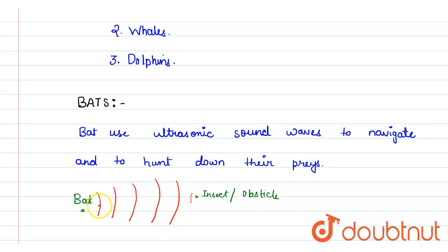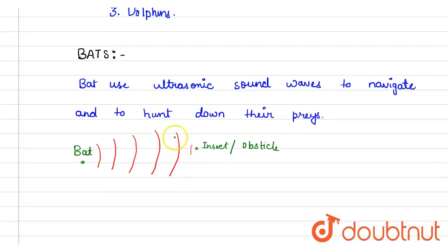And the reflected waveform is received by the ears of the bat, and it can recognize what it is—an insect or obstacle—so it can navigate it or hunt it down.